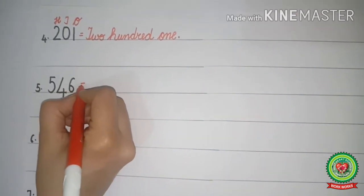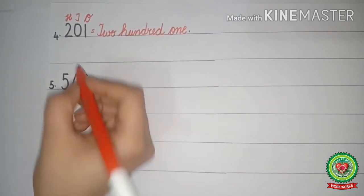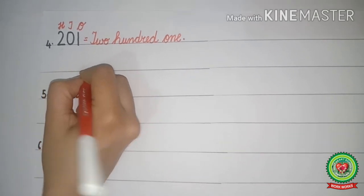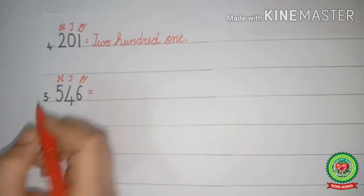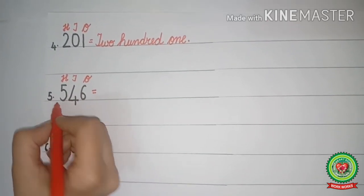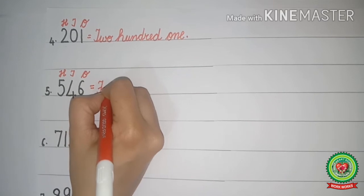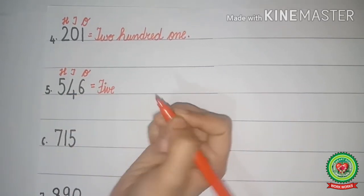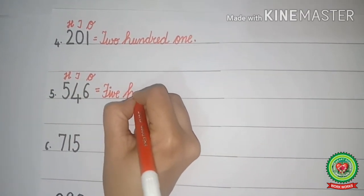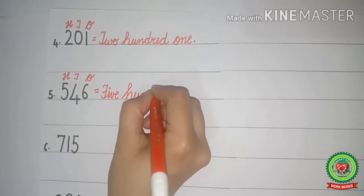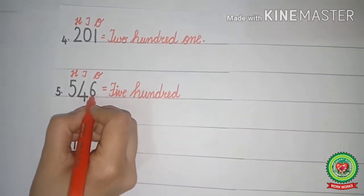Now let's see another example. Here I have taken 3 digits: 5, 4, and 6. Again, our first step is to write the place value chart: 1s, 10s, and 100s. What is under 100s? 5. So we will write first the spellings of 5 - spell 5 with me: F-I-V-E. Now 5 with 100 - we will write the spellings of 100 - H-U-N-D-R-E-D.